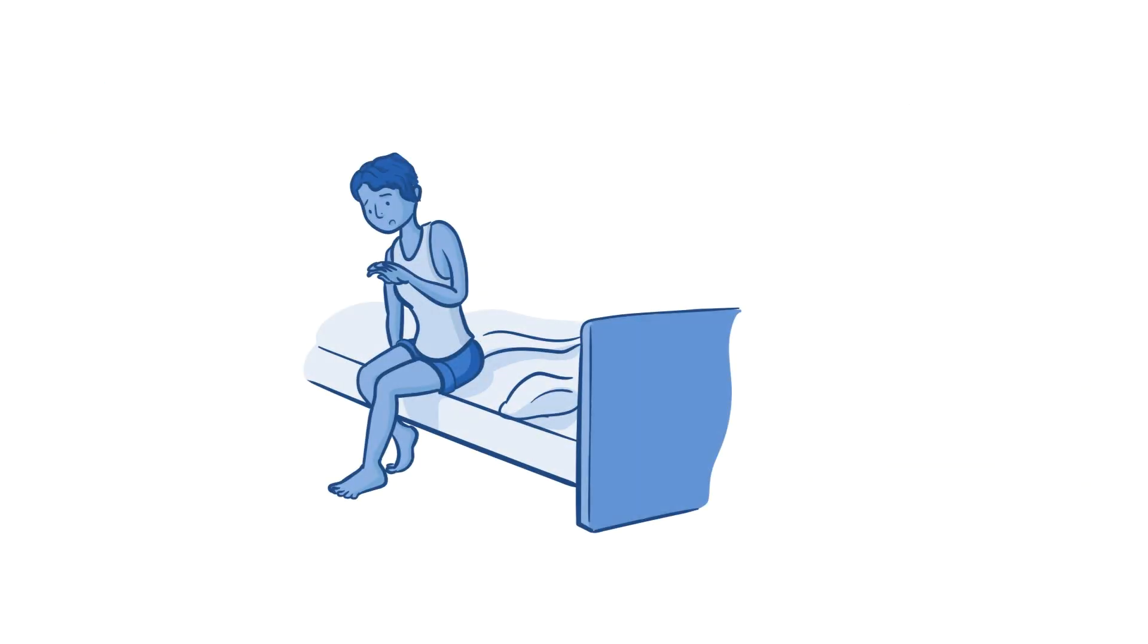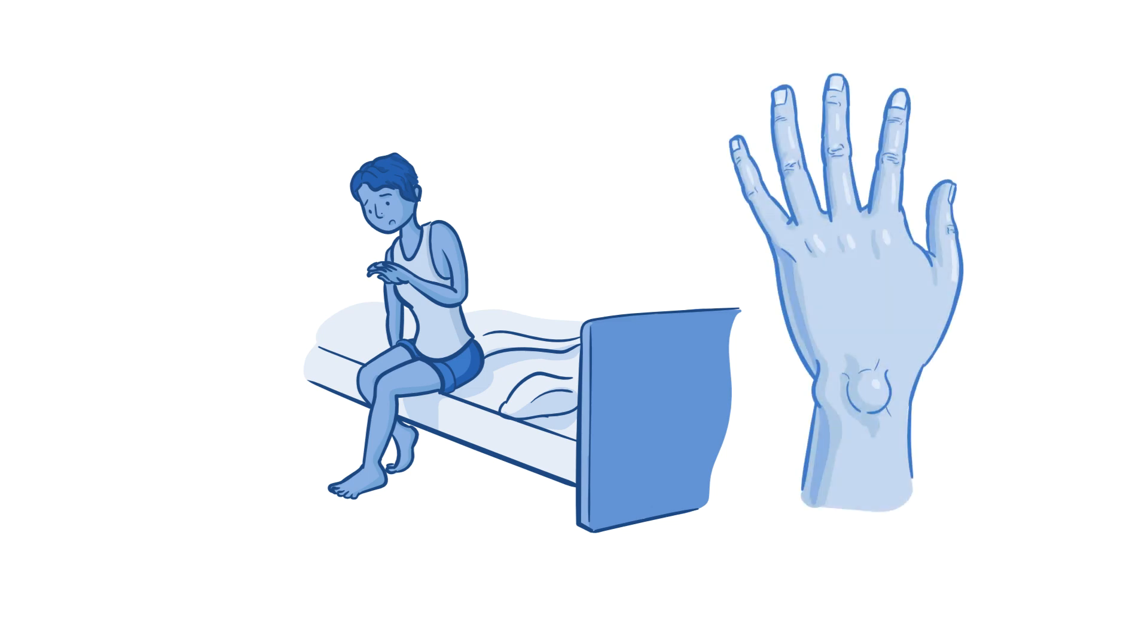One morning, Sophia woke up and noticed that her left wrist was hurting, and that there was a lump there. She had felt the pain before, but it was a large lump that had worried her. Could this be a tumor, she wondered aloud, as she picked up the phone to make an appointment to have it checked out.